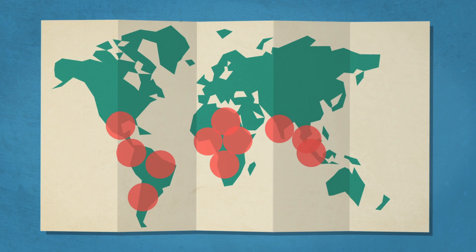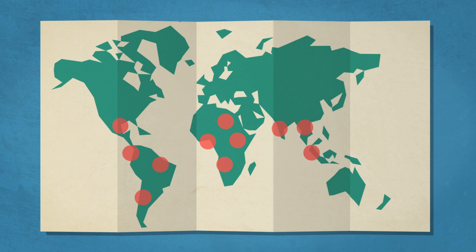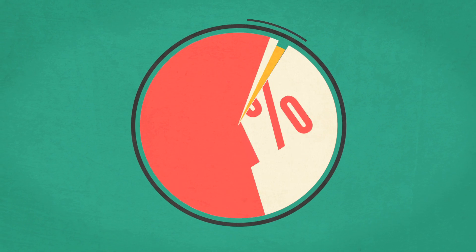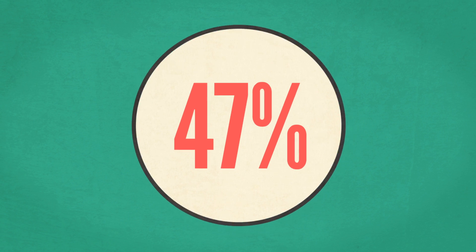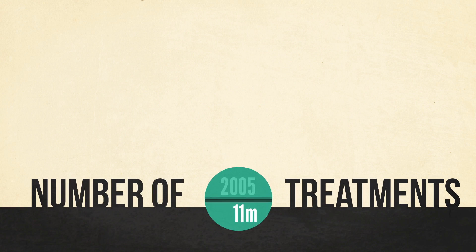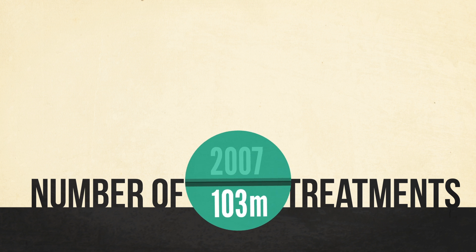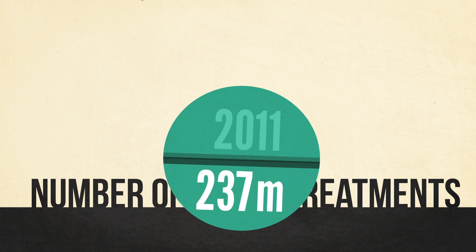Since 2000, malaria mortality rates across the world have fallen by nearly half. Antimalarial drugs, including artemisinin combination therapies, have been pivotal to this progress.